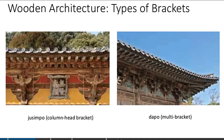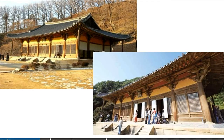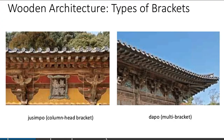Wooden architecture and the types of brackets used in Korean architecture are seemingly the same as those of China and Japan. There are two brackets in Korean architecture: the Jusimpo, or the column head bracket, and the Dapo, or the multi-bracket.